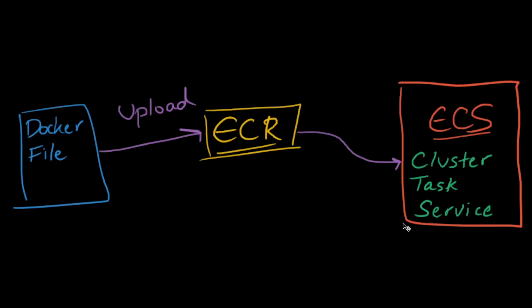A cluster is basically a logical grouping of hardware resources. A task is a template that contains metadata about how you should deploy your Docker container onto a machine - this is where you set up things like memory, CPU, port mappings, and environment variables. A service is more for advanced use cases that require auto scaling, ensuring a certain number of containers are always up, load balancing, or blue-green deployments. In this video we're going to be using the cluster and the task.